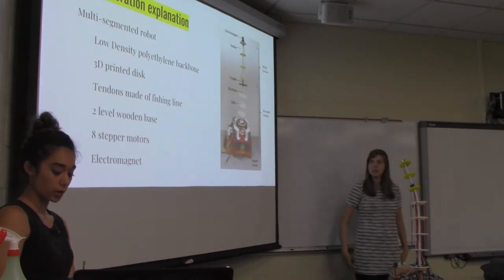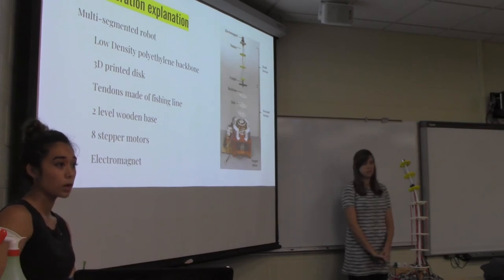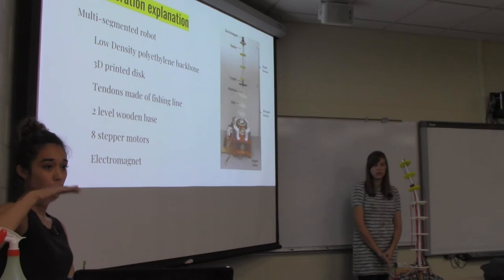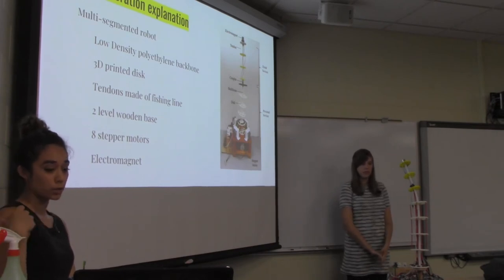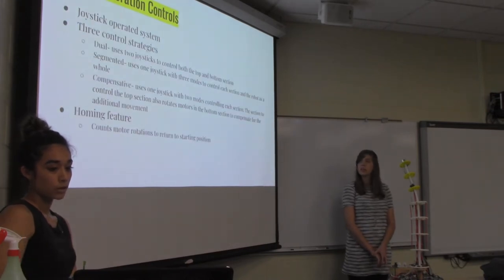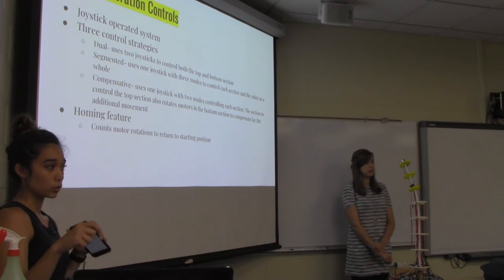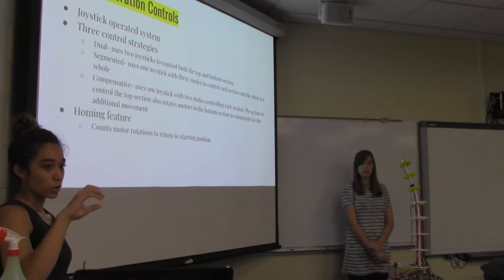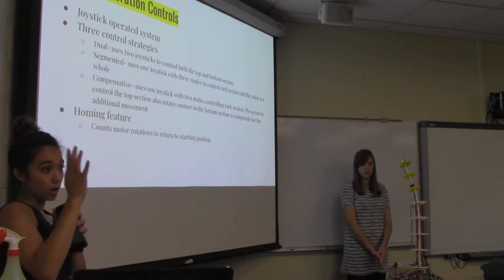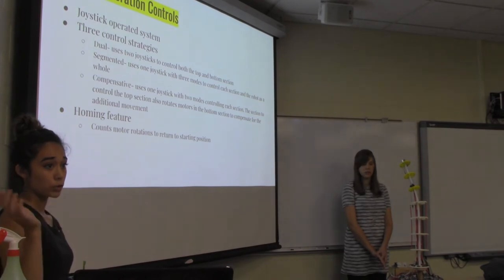So we worked off of a previous project of the continuum robot. That robot was double segmented. The backbone was made of a plastic low density polyethylene backbone. It is tendon driven using braided fishing line, which routed through 3D discs that were evenly spaced along the backbone and actuated by eight stepper motors. So it was designed with eight degrees of freedom, but in theory does have infinite degrees. The end effector is an electromagnet. The user was able to control this robot with three different types of control schemes. You could either use two joysticks to control different segments of the robot, a single joystick which you could change the mode to control different parts, or a compensative mode which would have the robot attempting to decouple the top and bottom segments as you drove it. There was also a homing feature where the motor rotations were used to bring the robot to an upright position.